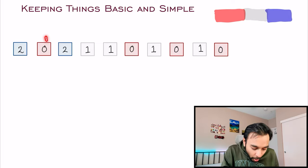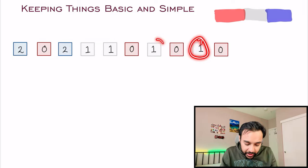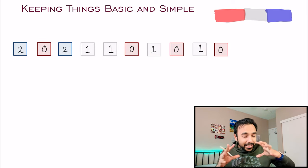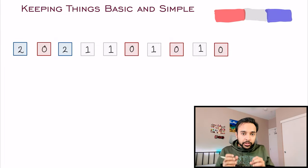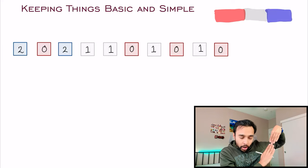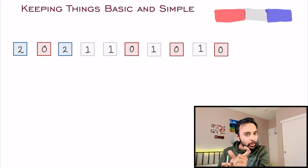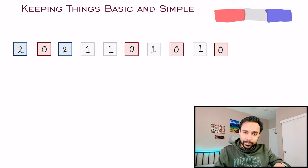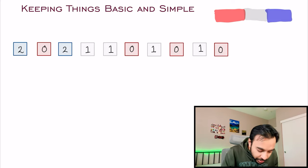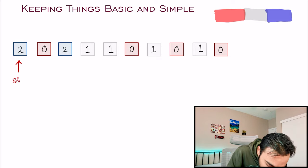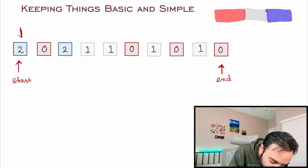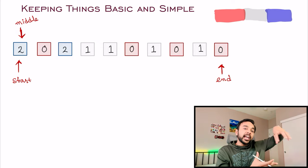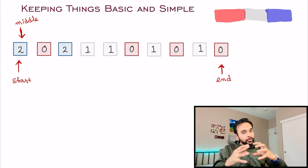Observe the pattern: all the 0s go to the beginning, all the 2s go to the very end, and all the 1s stay in the middle. In the previous non-in-place solution, we were filling 0s from the beginning, 2s from the end, and ones in the remaining spaces. We can do the same thing in place using pointers. I will take one pointer called start at the beginning, one called end at the very last location, and one called middle also starting at the beginning.